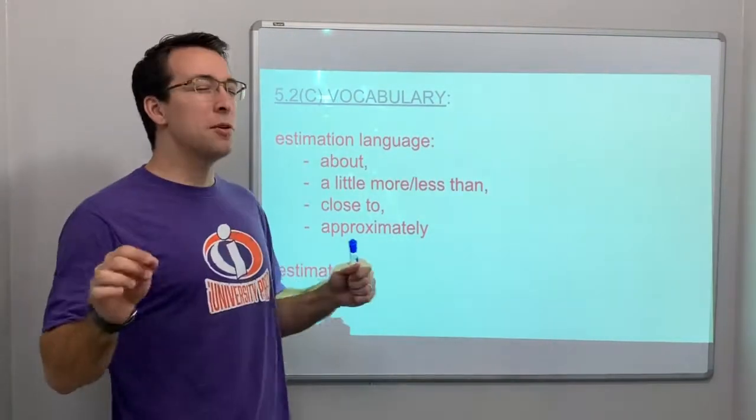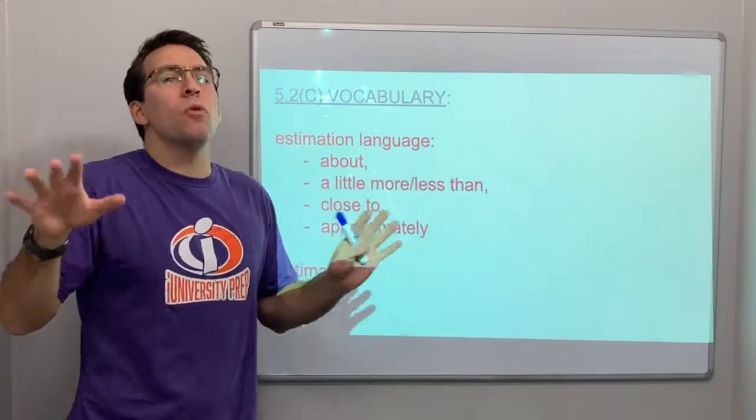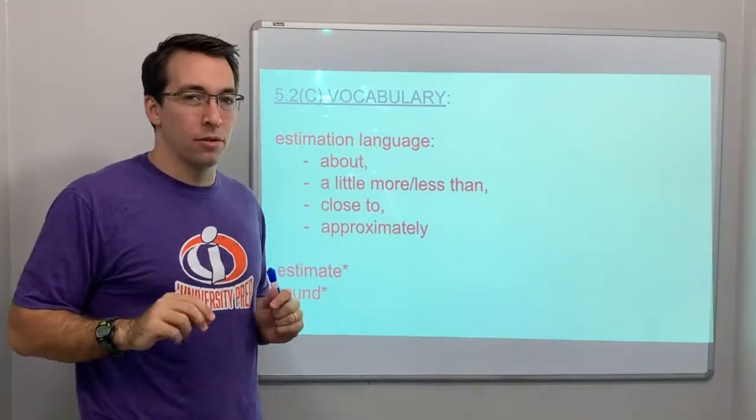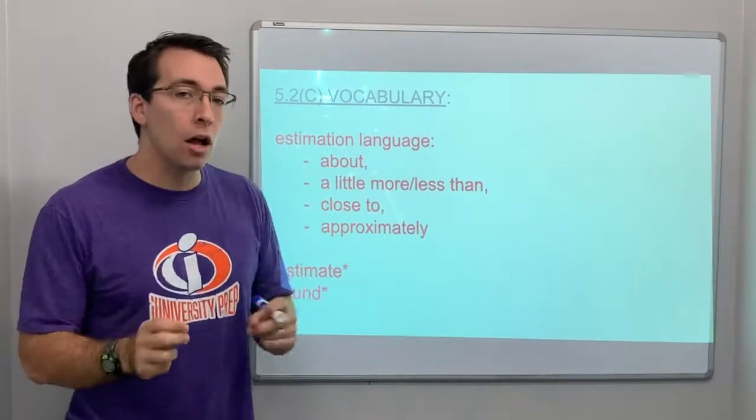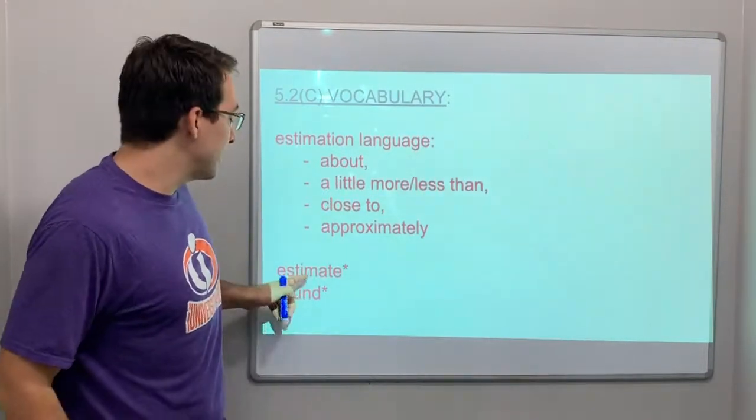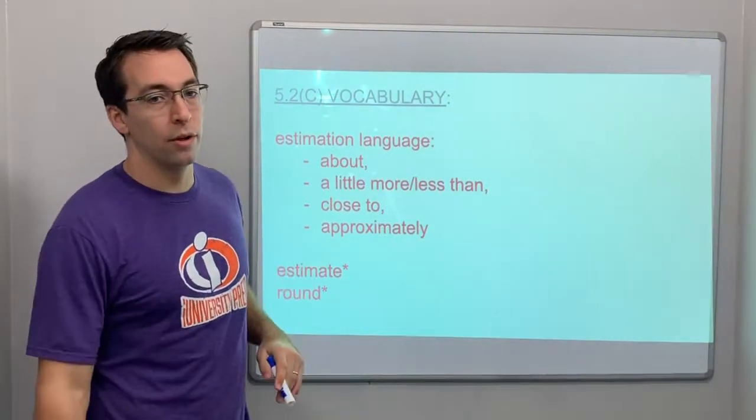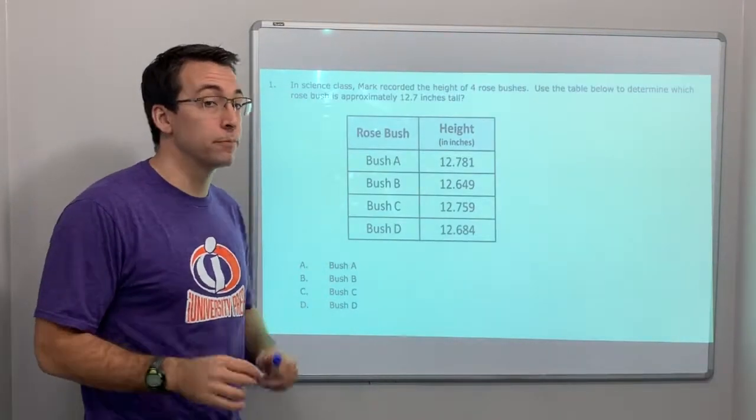Vocabulary. Anytime you have estimate, about, a little more or less than, right? If it's close to or approximately, all of that language, all of those words are used for rounding. Okay? That's called, you know, to estimate or to round. It's not going to be an exact answer. It's going to be close to.